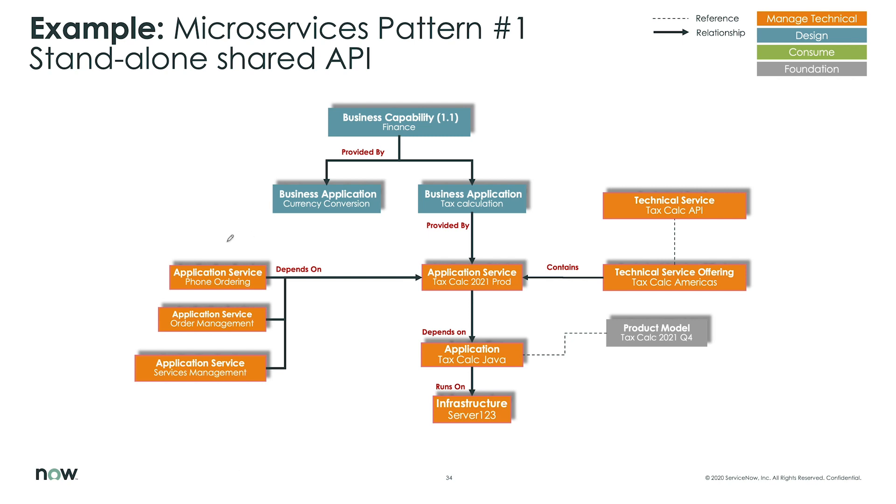And here, what we're identifying is that we have other application services that depend on this particular tax calculation. So we have a phone ordering system example, we have an order management system, and then here we have services that cause that particular tax calculation as well for calculating tax on services rendered.